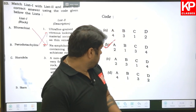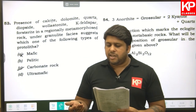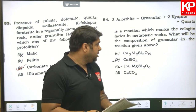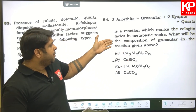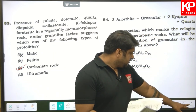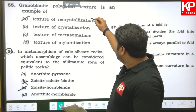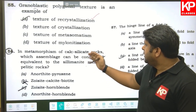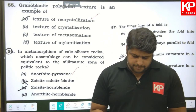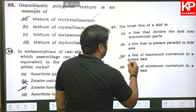Question fifty-three: the presence of calcite, dolomite, quartz, diopside, wollastonite, and K-feldspar in a regionally metamorphosed rock under granulite facies indicates a carbonate protolith. Question fifty-four: the reaction 3 anorthite + grossular = 2 kyanite + quartz marks an equivalent facies in metabasic rocks — this direction is given in the textbook. Question fifty-five: granoblastic polygonal texture is an example of a texture of recrystallization, so A is the right answer. Question fifty-six: in metamorphism of calc-silicate rocks, the anorthite + pyroxene assemblage is equivalent to the sillimanite zone.